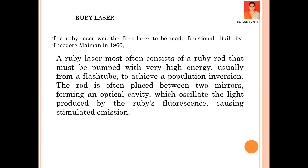Using optical pumping, we can excite more atoms to achieve population inversion. The two sides of the ruby rod — one side is completely silver polished, 100% reflective, and the other side is partially silver polished, about 10% transmitting — so you can emit laser light while the rest is reflected. As reflections build up, the amplitude increases and the laser light is amplified.